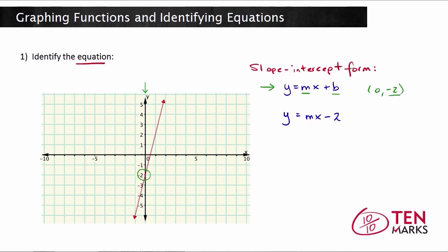There are a couple of different ways to find the slope. The first way is using the slope equation. To use the slope formula, you need to find two points that fall on the line, and you make a fraction by subtracting two y values over two x values. We've already found one point, which is the y-intercept (0, -2). Now let's find another point on the line. I see that the line passes through (1, 2). So when x equals 1, y equals 2. Now you can use these two points and fill in your slope formula.